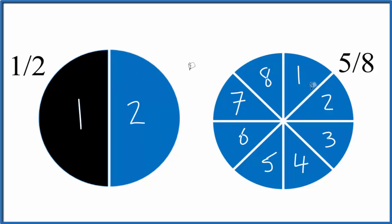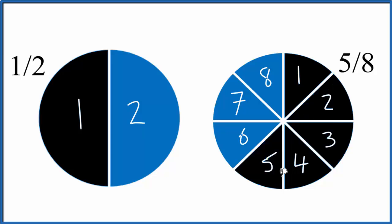The black area is the 1 half. Over here, we'll shade in five pieces. 1, 2, 3, 4, 5. That's 5 eighths, because each piece is 1 eighth.